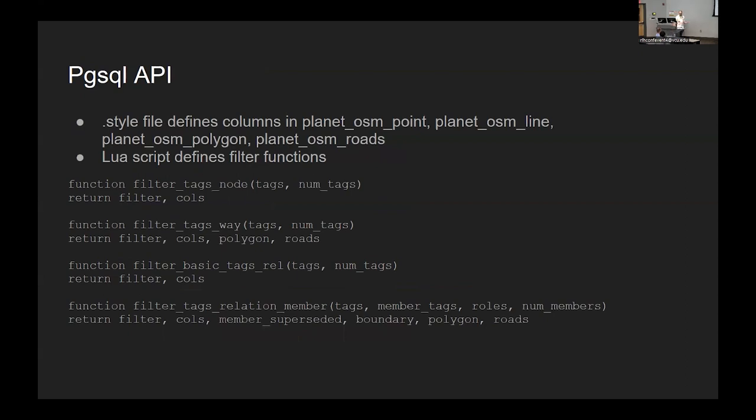With the pgsql API, you've got a file that defines all of your columns, and then you supply a Lua script that tells you how to go from OSM tags to the columns and if it should appear in certain tables. You supply these functions in your code to OSM2PGSQL and it will process the planet. The problem was that these don't really extend to arbitrary tables.